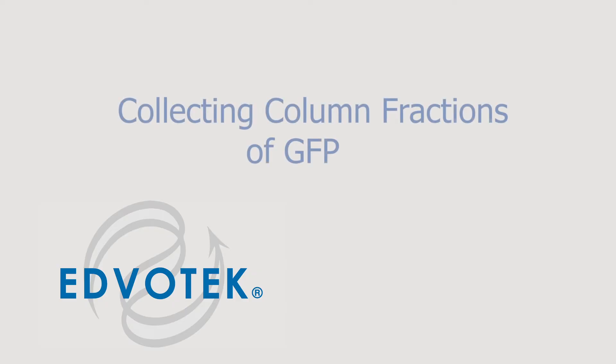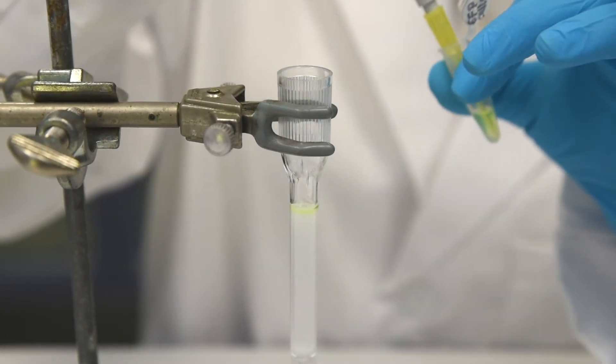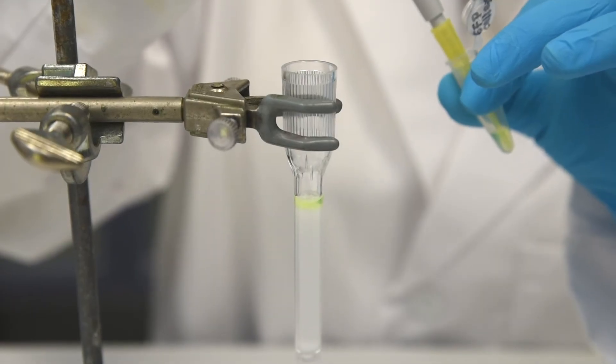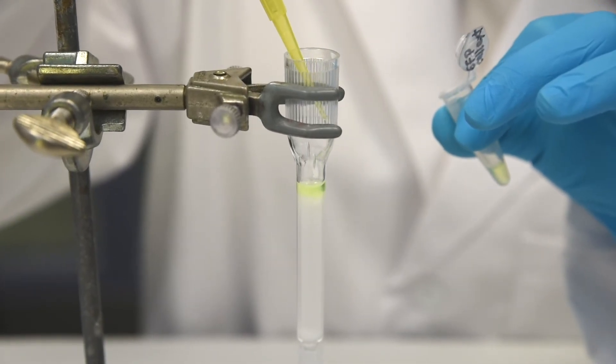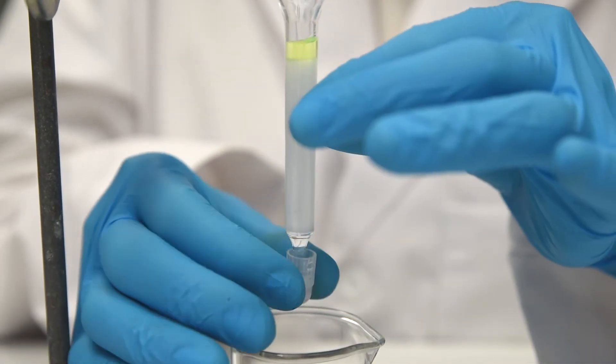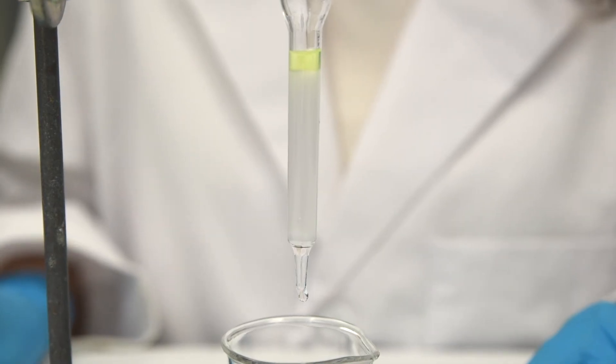Collecting column fractions of GFP. Step 1: Slowly load the column with 0.2 ml of the GFP extract from Module 2 or Control GFP extract. Remove the cap and allow the extract to completely enter the column, collecting the flow-through waste in your beaker.